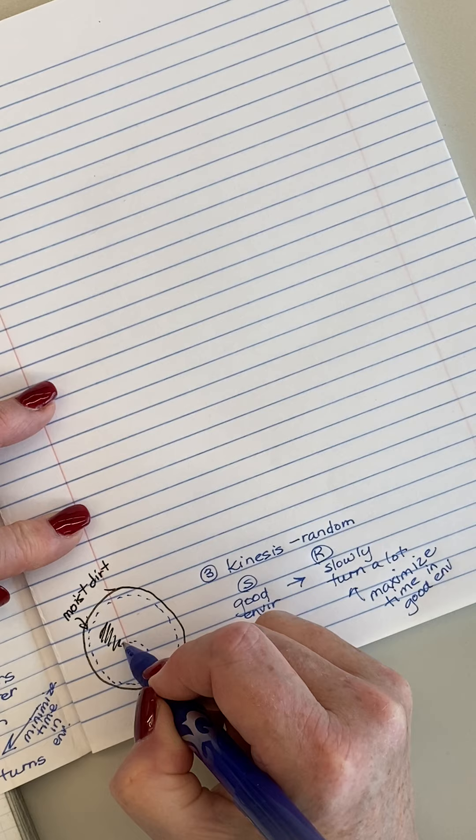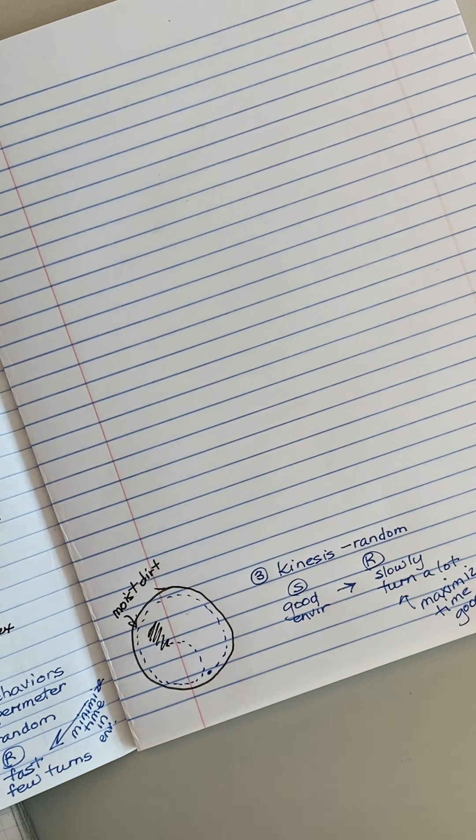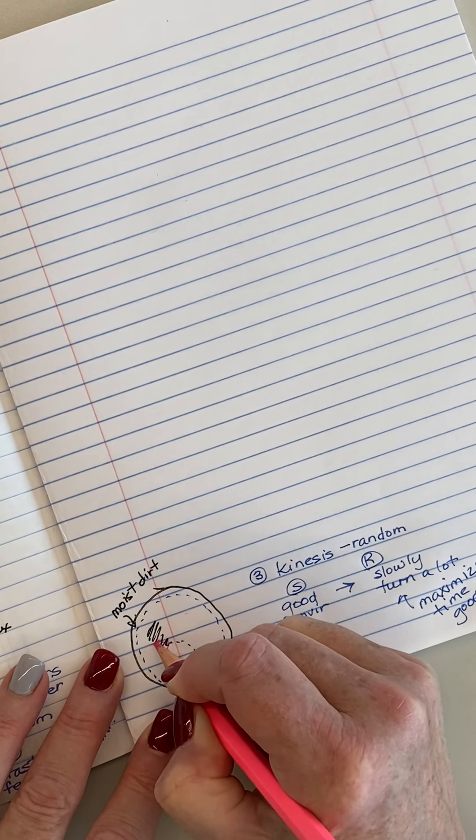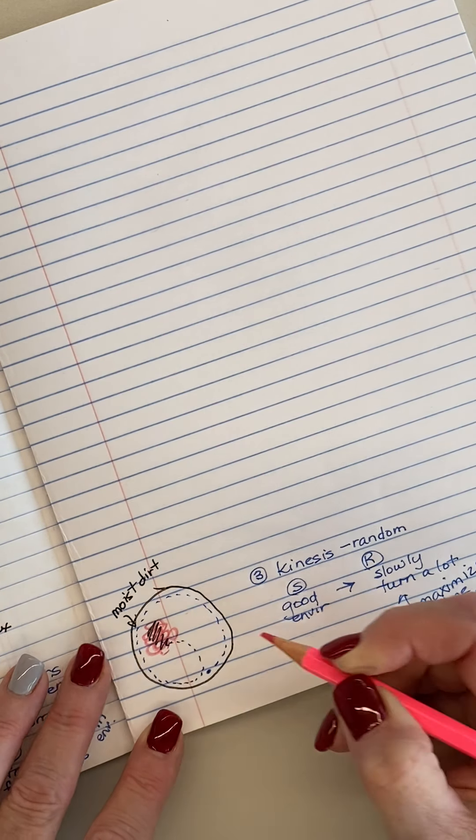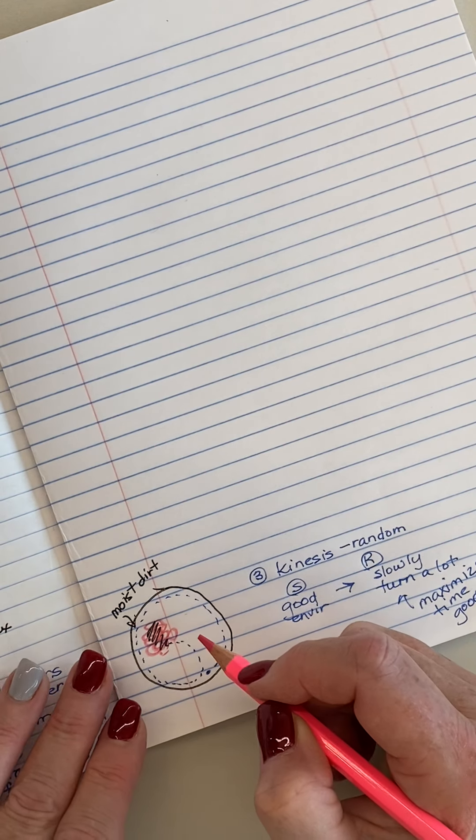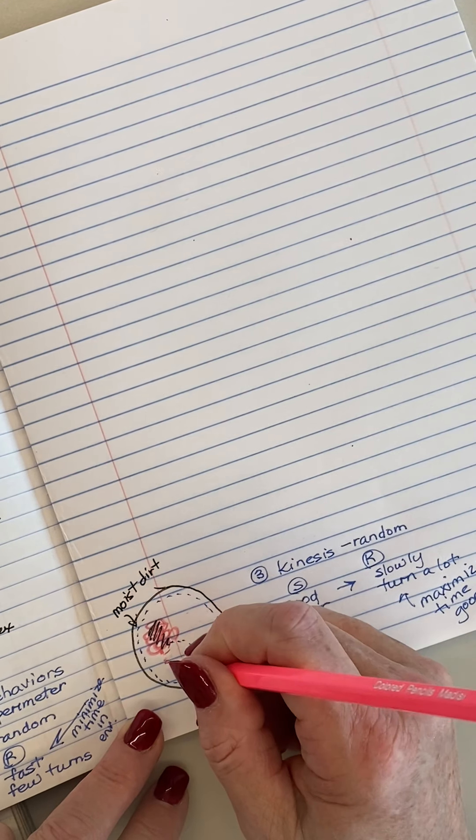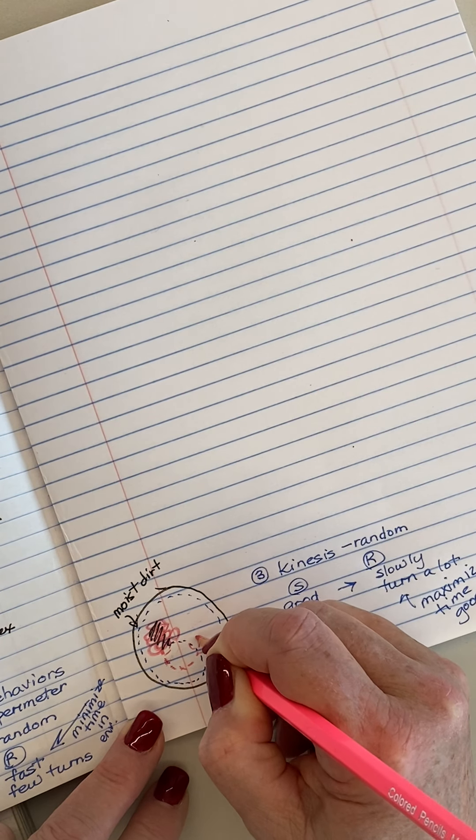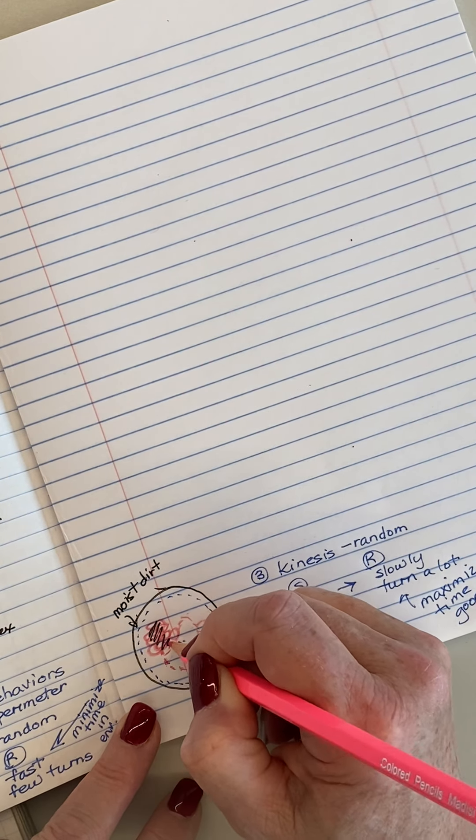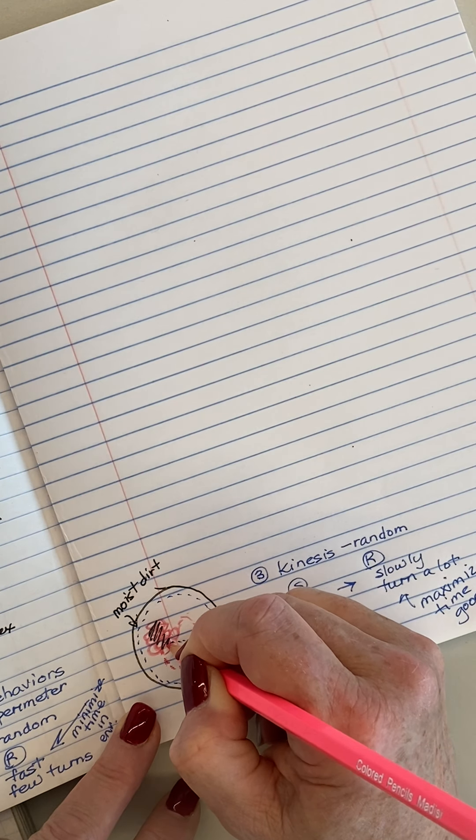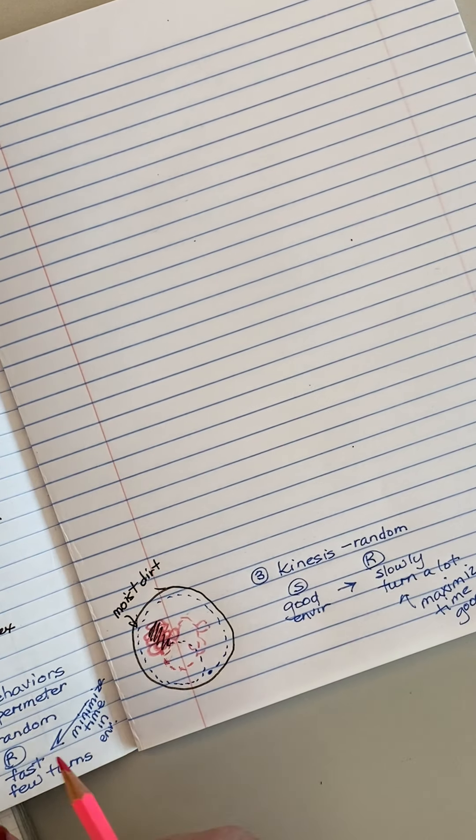So the response would be move fast and make few turns. By random chance, this pill bug got to the moist dirt, which is a good environment. So this is going to be an example of kinesis. Again, random movement. The pill bug was not moving to the dirt. It just happened there. So the stimulus is a good environment and the response will be to move slowly and to turn a lot. So what that'll do is maximize the time in the good environment. So the pill bug would instead of moving quickly, it's going to make a lot of turns moving slowly. But it's going to make a lot of turns and it'll maximize the time there.